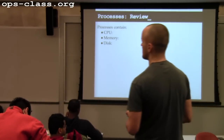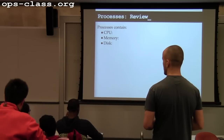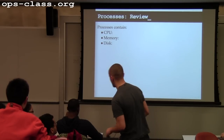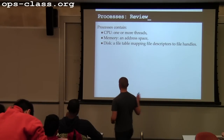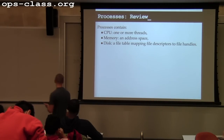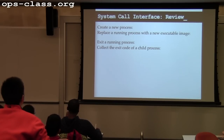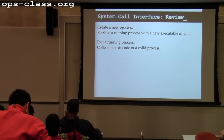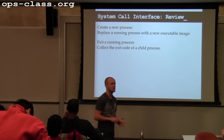What we talked more about for the disk was file handles. A process has one or more threads, an address space, and a file mapping — file descriptors, which are those integers pointing to file handles, the objects shared after fork. The system call interface includes the calls used to create processes, which you'll implement for assignment two: fork, exec, exit, and wait.